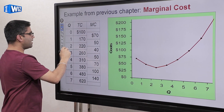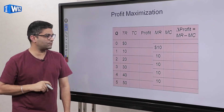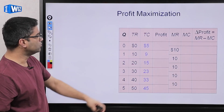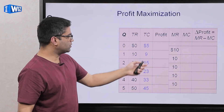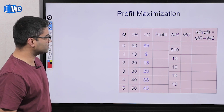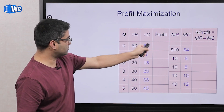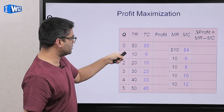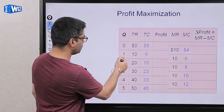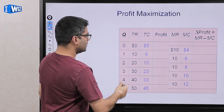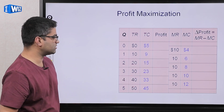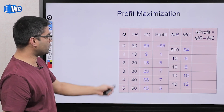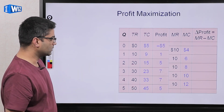Now for a numerical example: you have total revenue as price times quantity, total cost is given, and profit is total revenue minus total cost. Marginal cost is change in total cost divided by change in quantity. For example, when you go from 1 to 2 units, your costs change by 6 and quantity changes by 1, so marginal cost is 6.